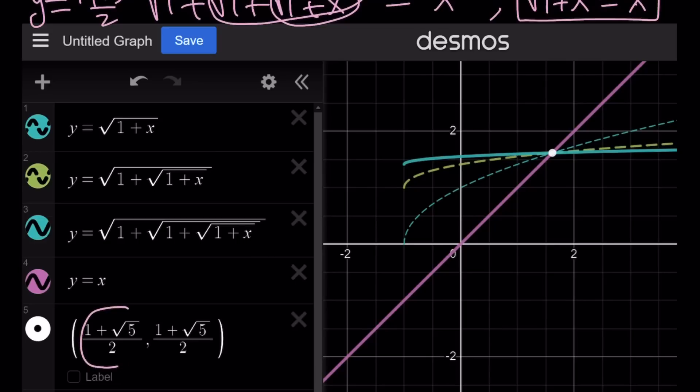And since x and y values are equal, they're also on the line y equals x. Why is y equal to x? Because remember, the square root of 1 plus x is equal to x, and that means y equals x. And this brings us to the end of this video.